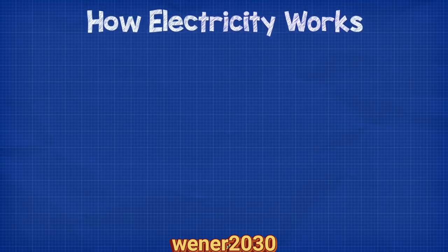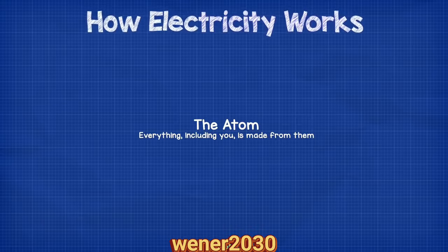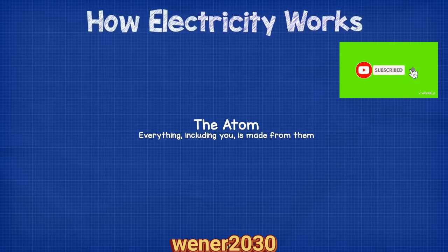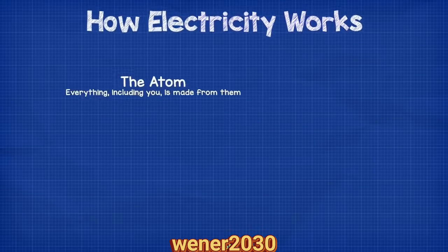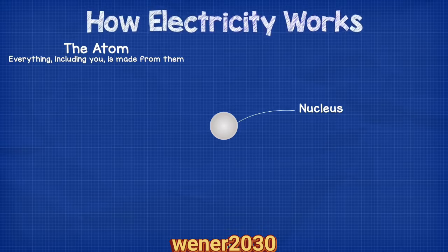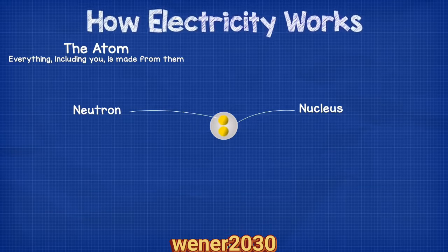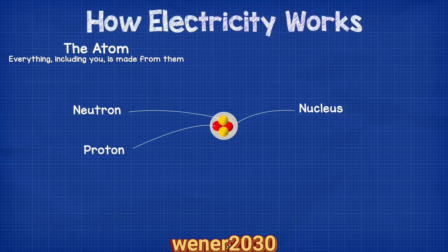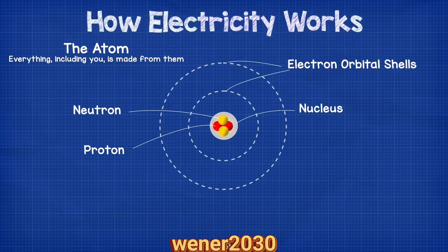Let's start at the very basics, and for that we need to take a look at the atom. Everything, including you, is made from atoms. All the materials we use are made from atoms; the materials are just different because the construction of their atoms are slightly different. The atoms are made from three particles — two of which are found inside the nucleus. At the center of the atom we have the nucleus. Inside the nucleus we have the neutrons, which have no charge, and we also have the protons, which are positively charged.